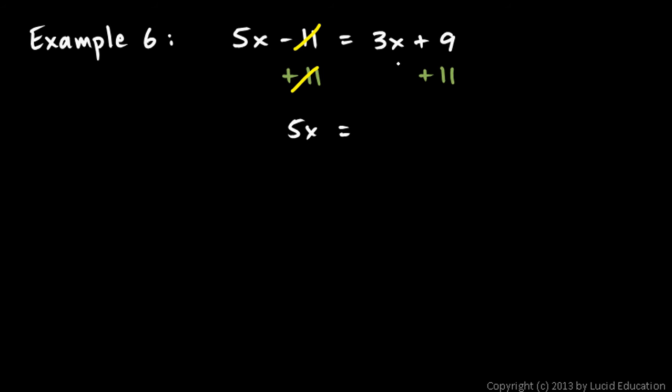And the right side, 3x plus 9 plus 11, these can combine, the 9 and the 11 there. The right side becomes 3x plus 20, because 9 plus 11 is 20.